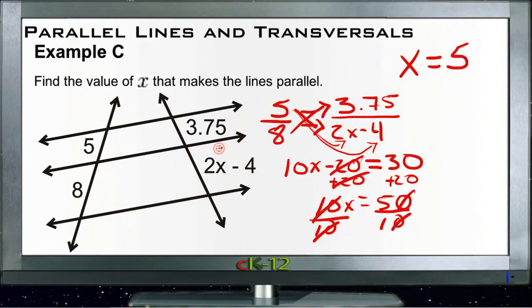And if x is 5, then this segment down here is 2 times 5 which is 10 minus 4 is 6, which is reasonable. If 5 compares to 8, 3.75, or a little less than 4, compares to 6, and that would make all of these lines here parallel with each other. And we're done.